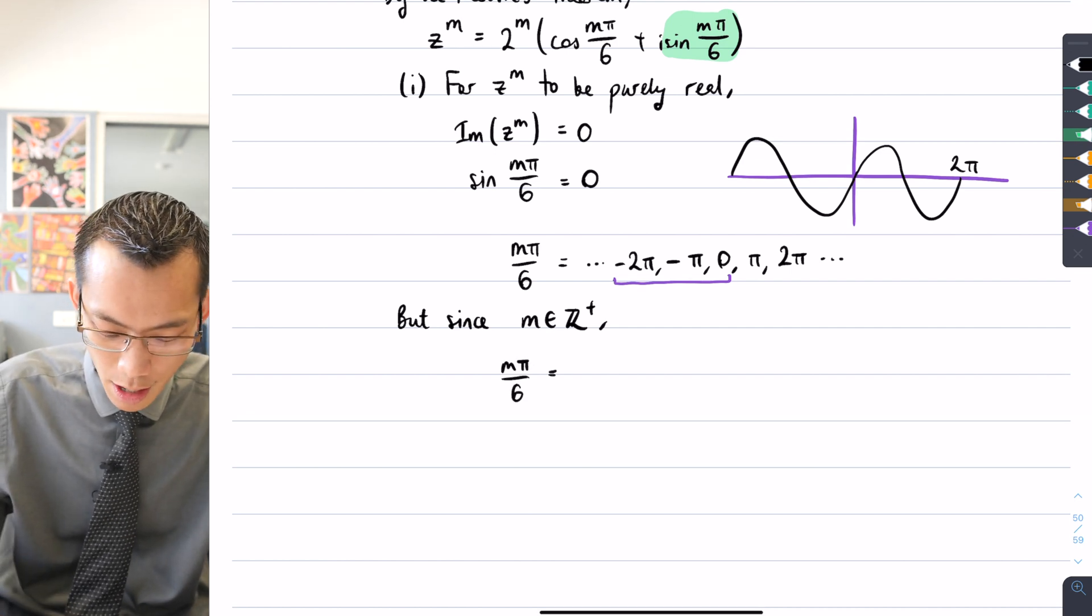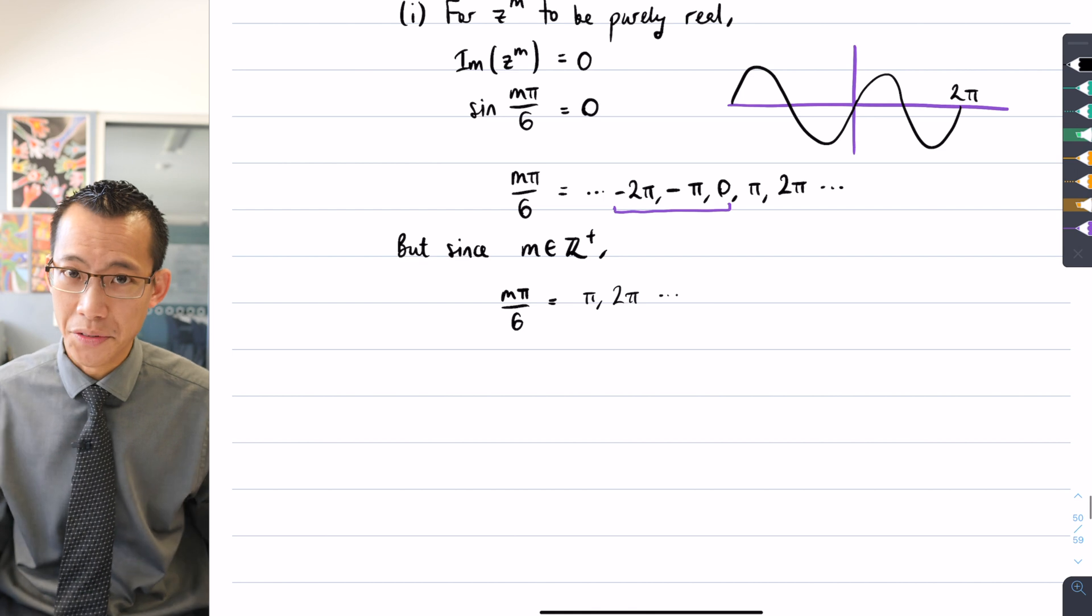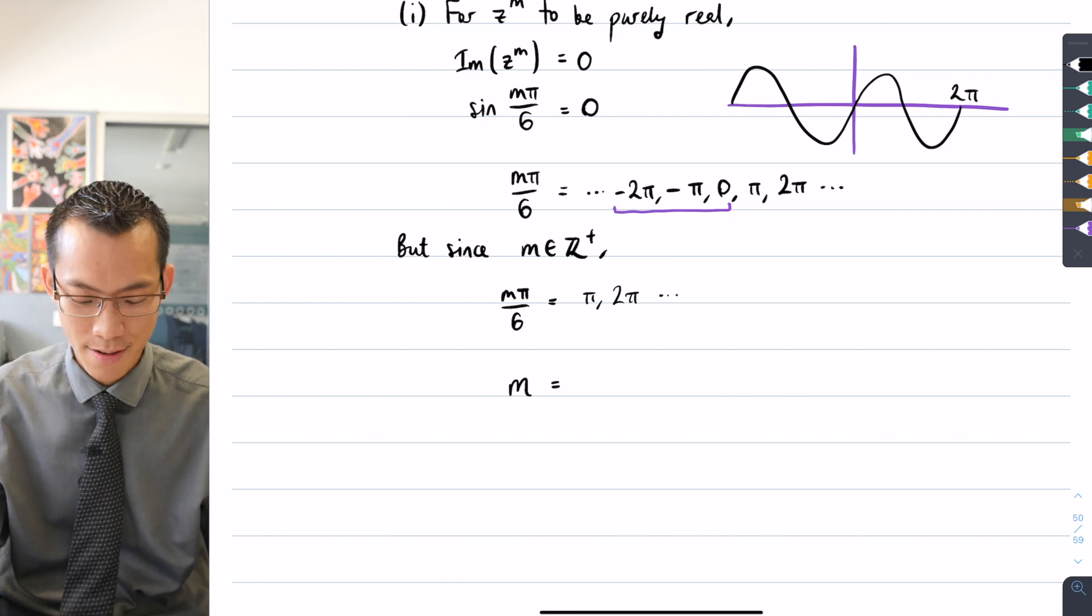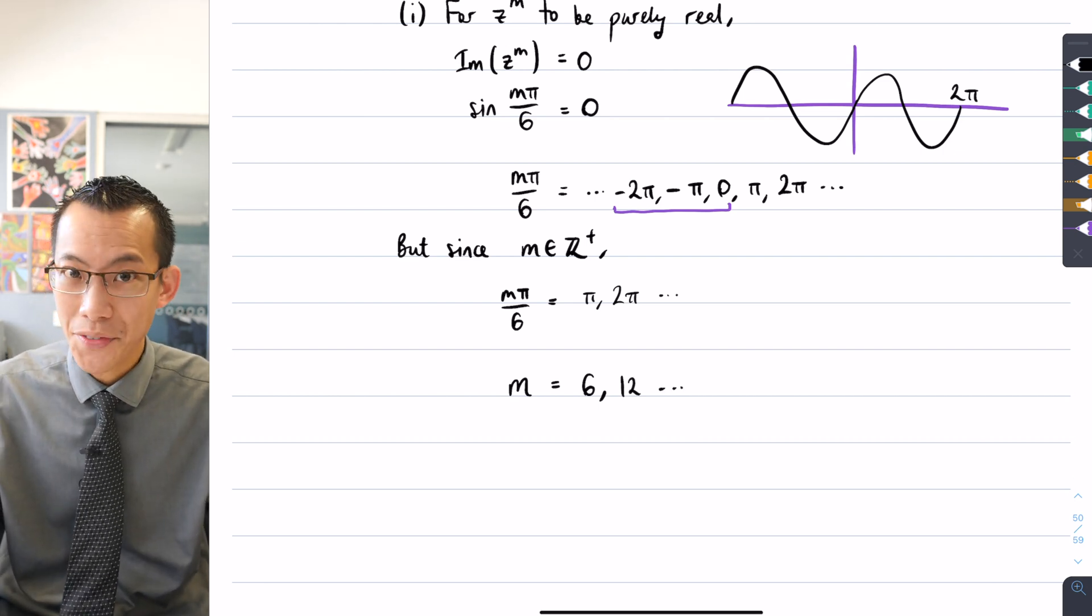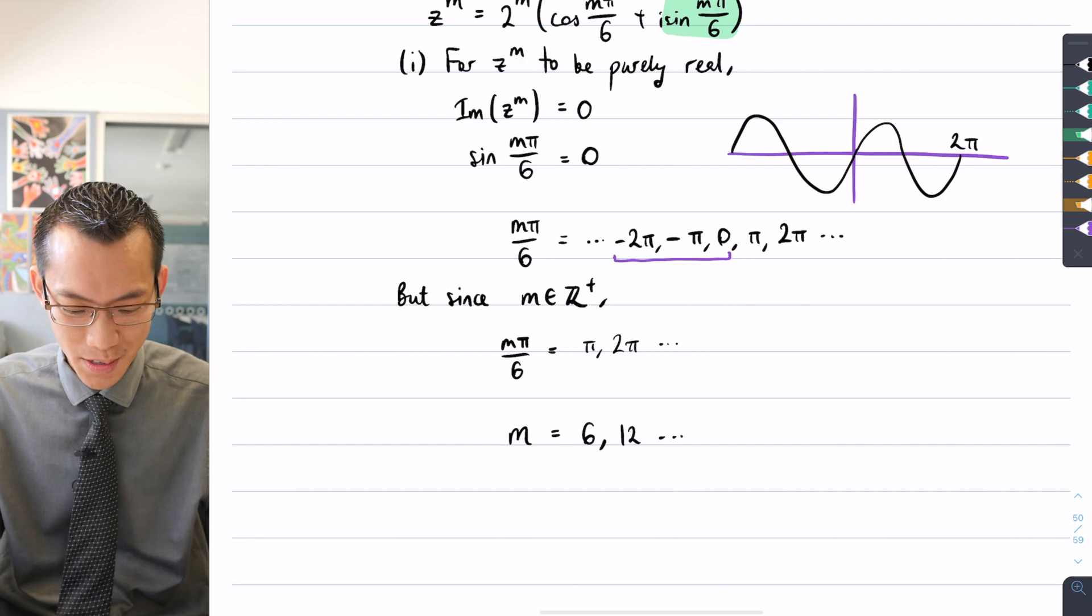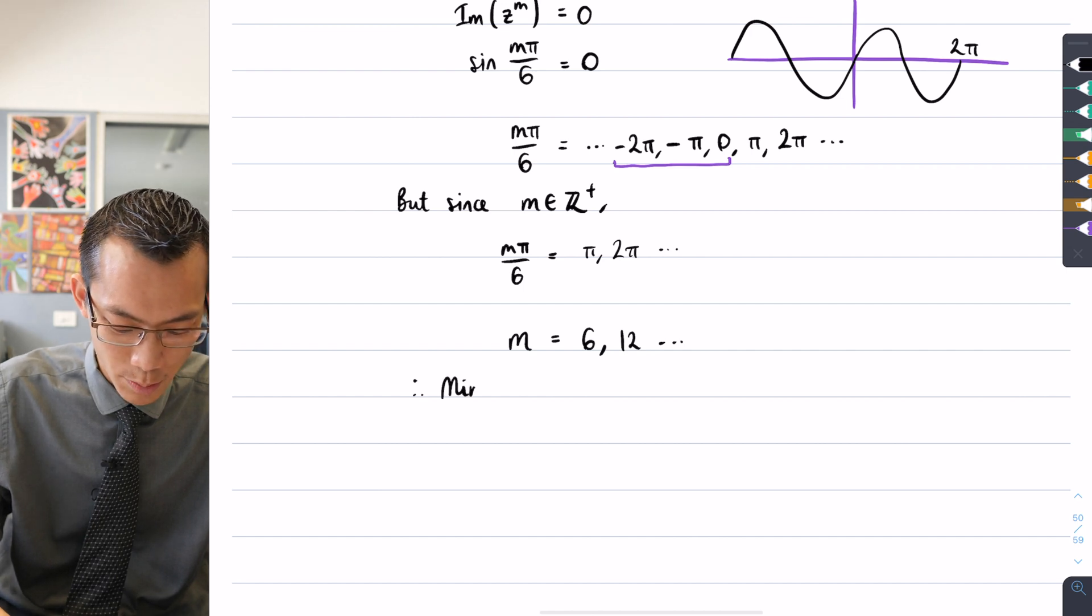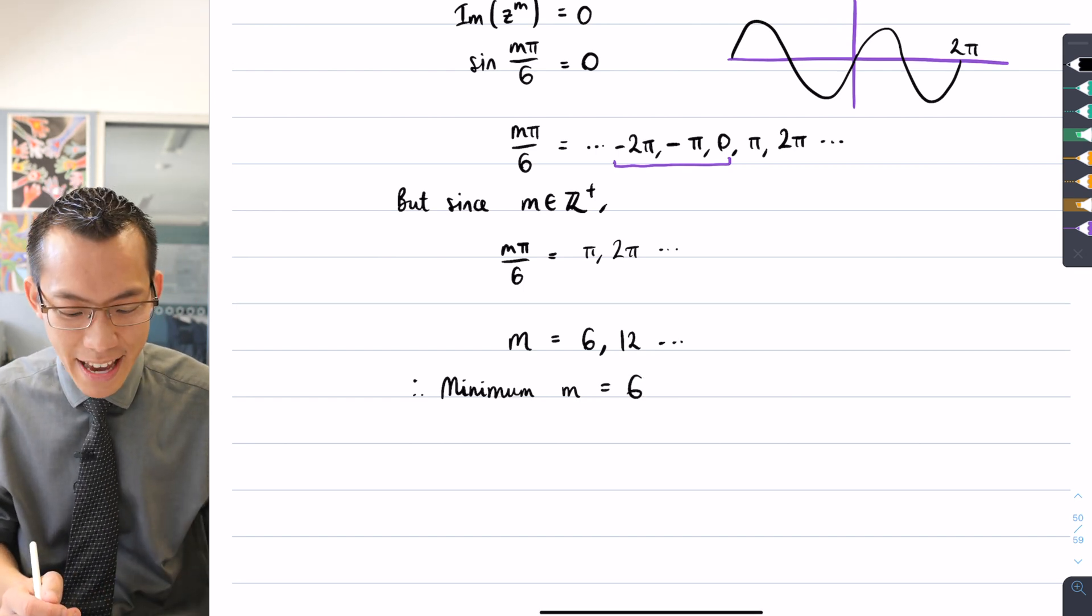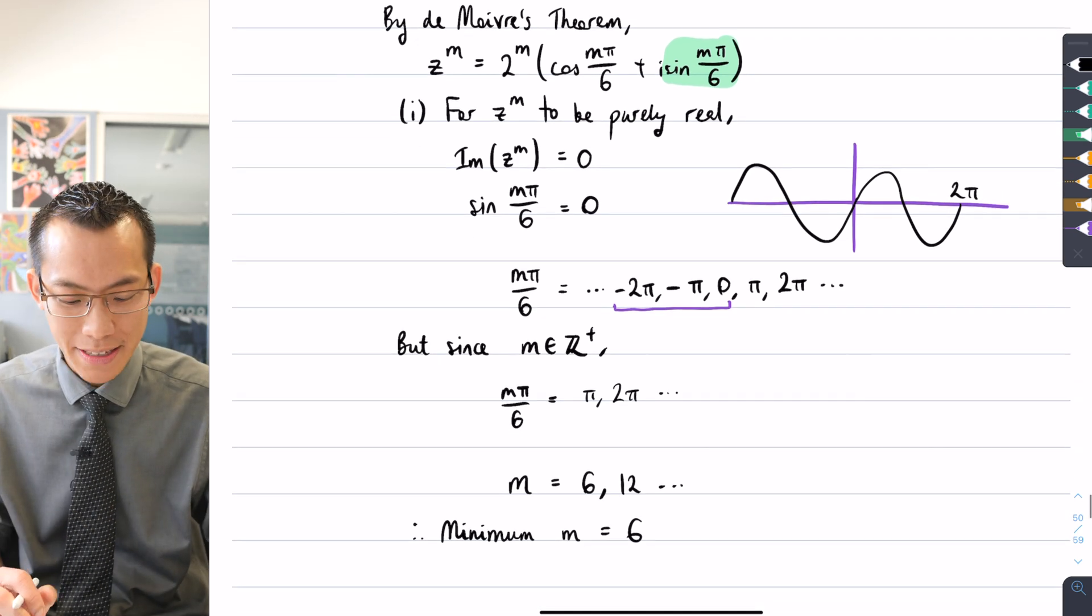But since m is a positive integer, mπ/6 has to equal only π, 2π, and so on. I'm trying to solve for m, so I'll multiply both sides by 6/π. That gives me m = 6, 12, and so on. These are the values of m that will make z^m purely real. I don't want all the values, just the smallest value—the minimum value. The minimum m equals 6. We'll come back to this result, but for now I've solved for m, the smallest value that will make z^m purely real.